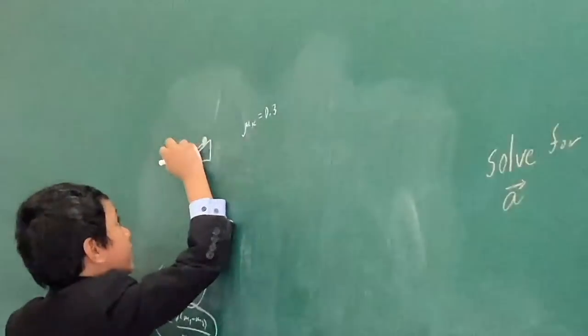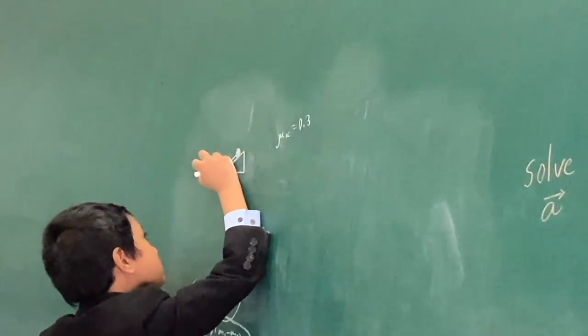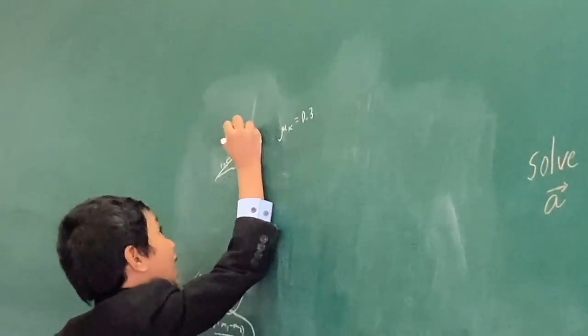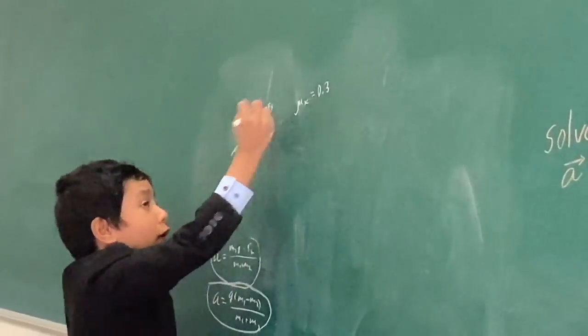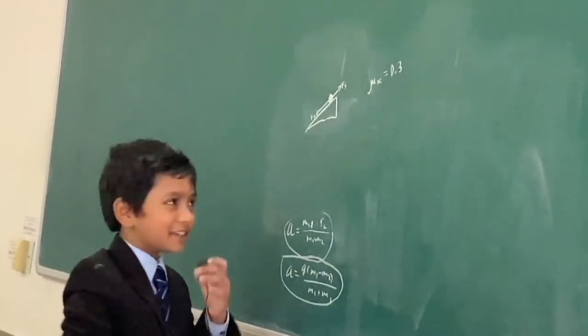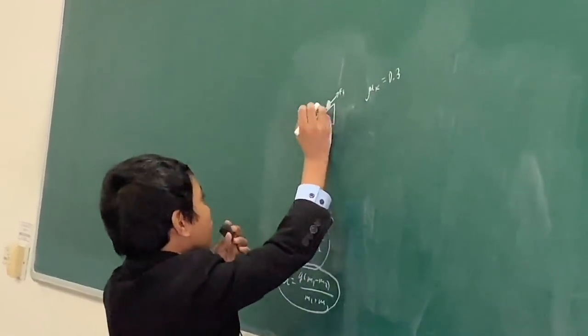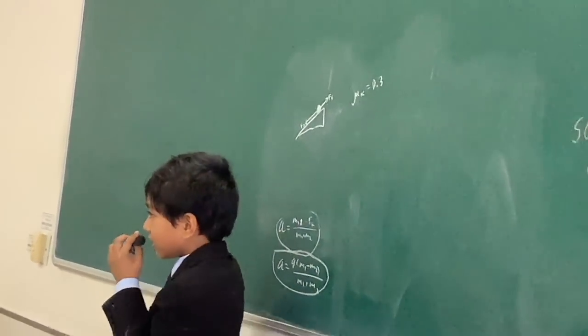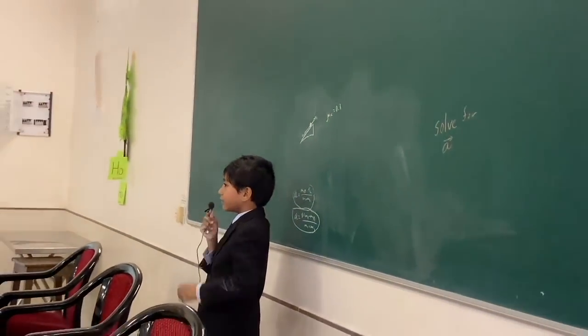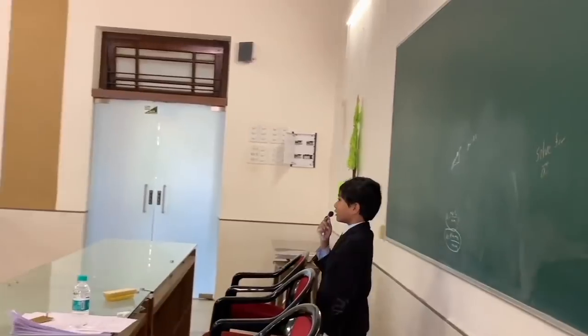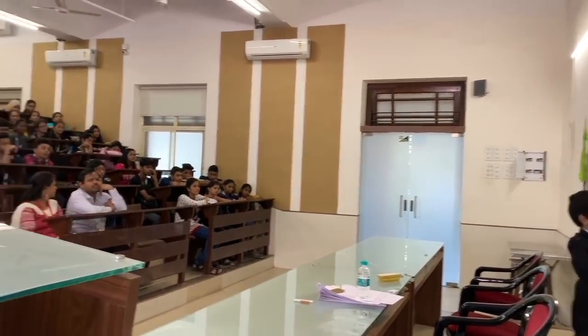But, anyway, this has something, a force in front of it, FG parallel, and then a force behind it, which is FF. So, now, these are the two forces. Can somebody explain to me what FG parallel is and what FF is?